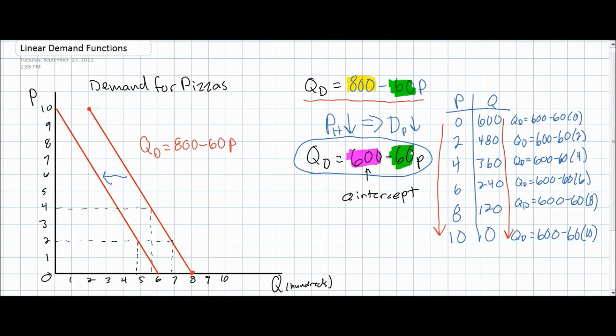Whereas at a price of $4, instead of there being 560 pizzas demanded as there were in our original demand schedule, there are now only 360 pizzas demanded. This is because the demand for pizzas has decreased due to a change in one of the non-price determinants of demand.